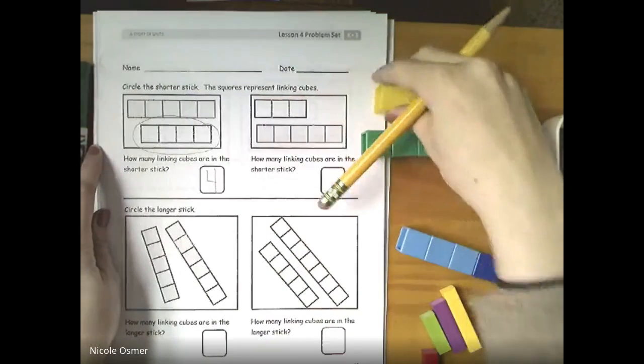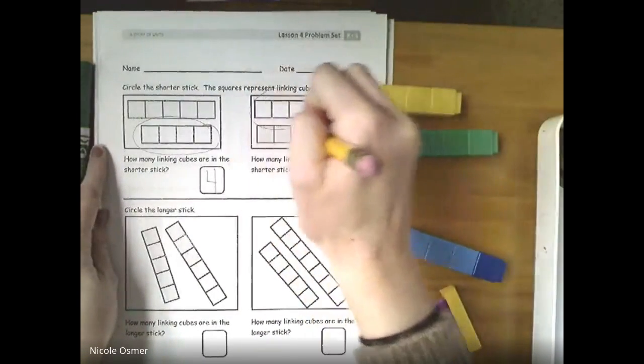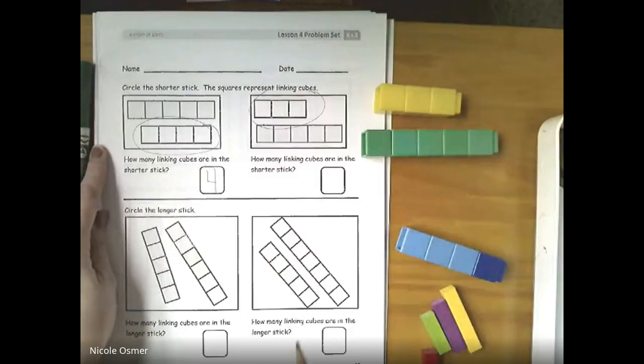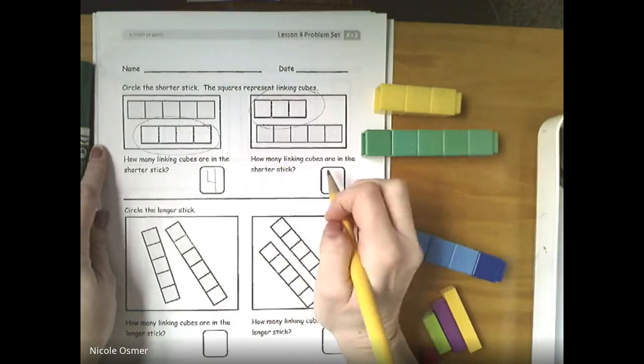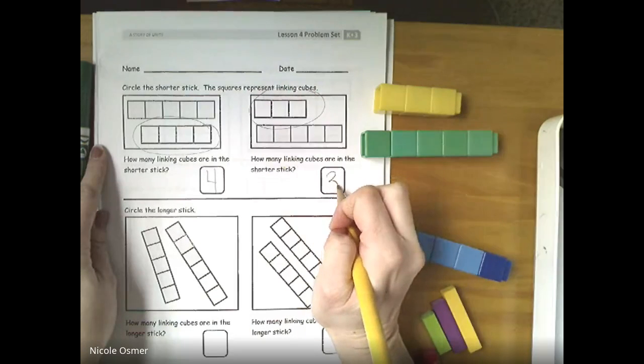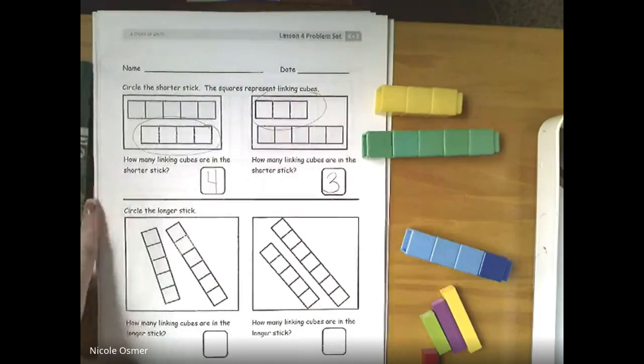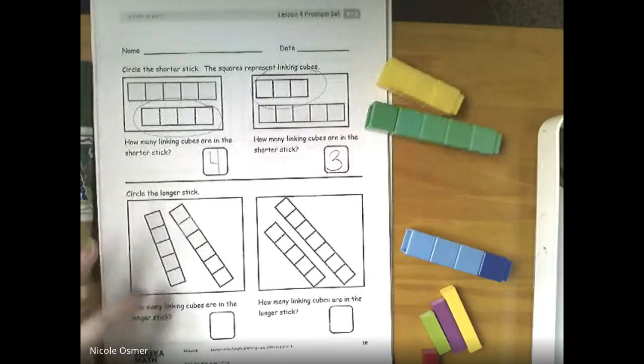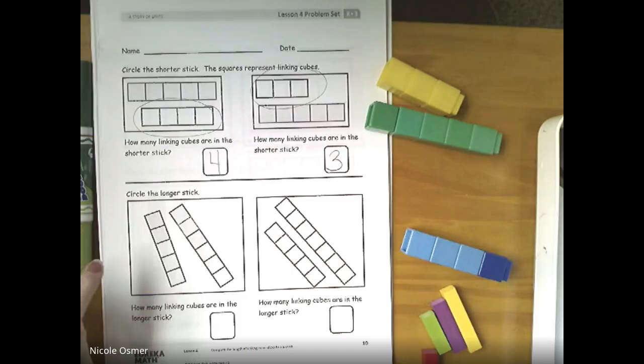The squares over here also are the cubes. Here's the five. Here's the three. Three is shorter than five. How many linking cubes are in the short stick? That's right. Around the tree, around the tree. That's how we make a number three.